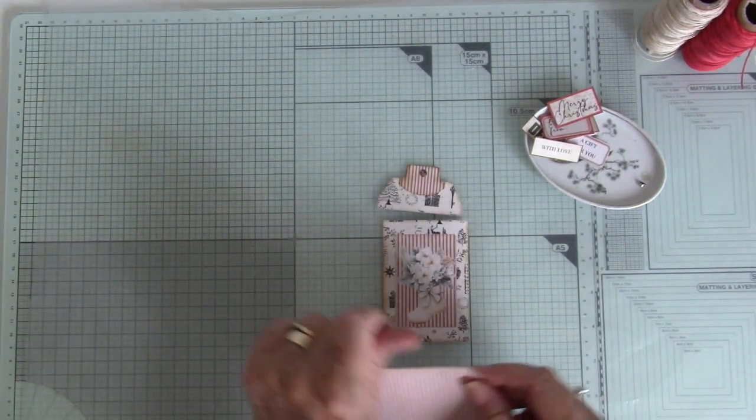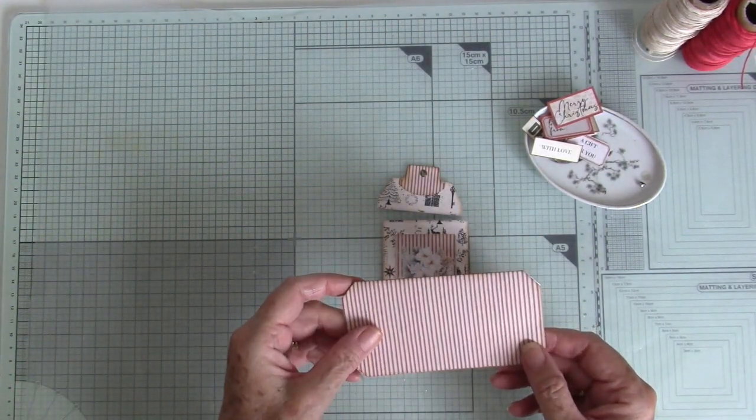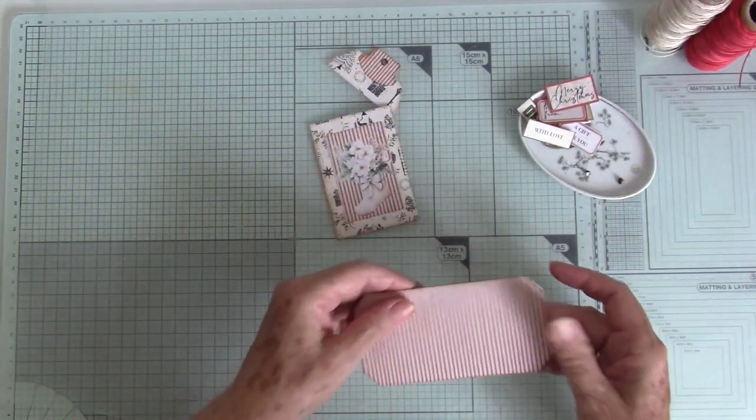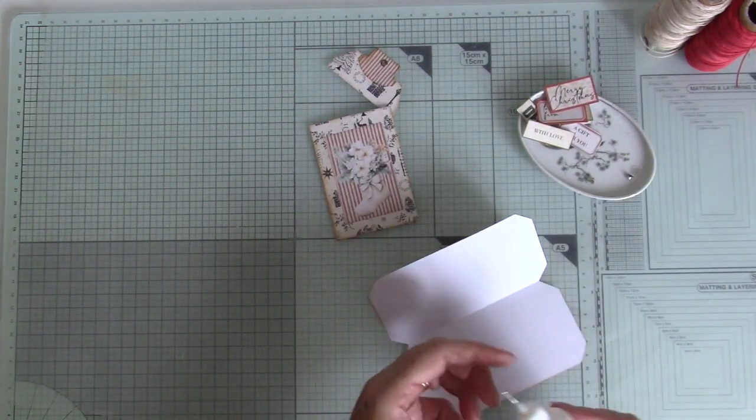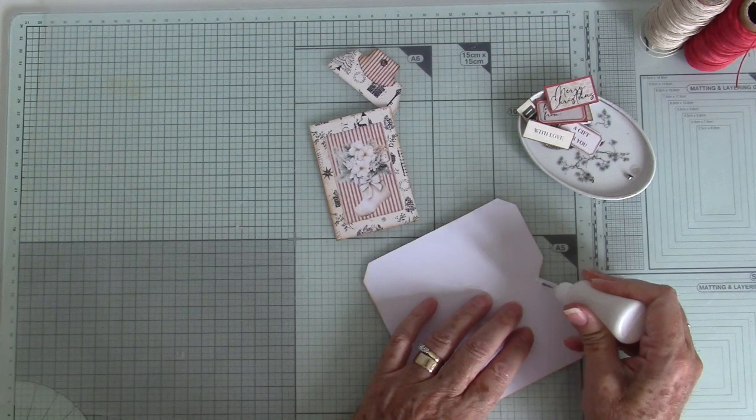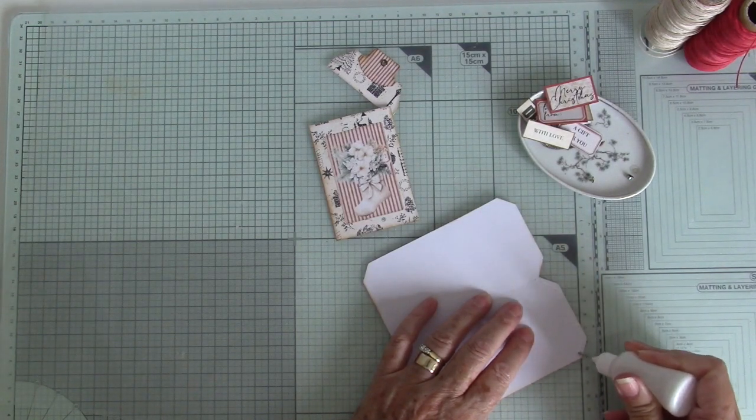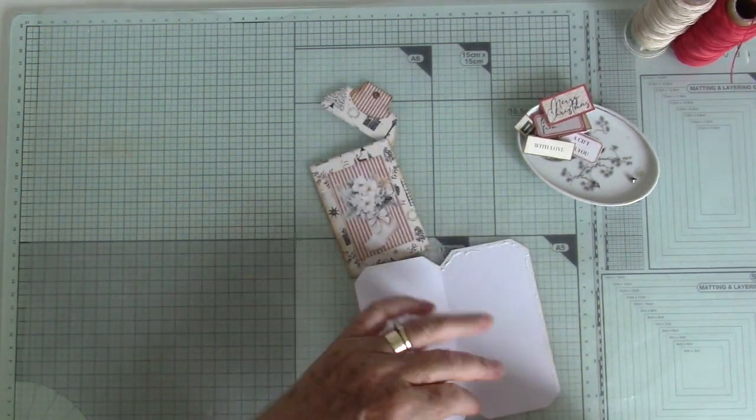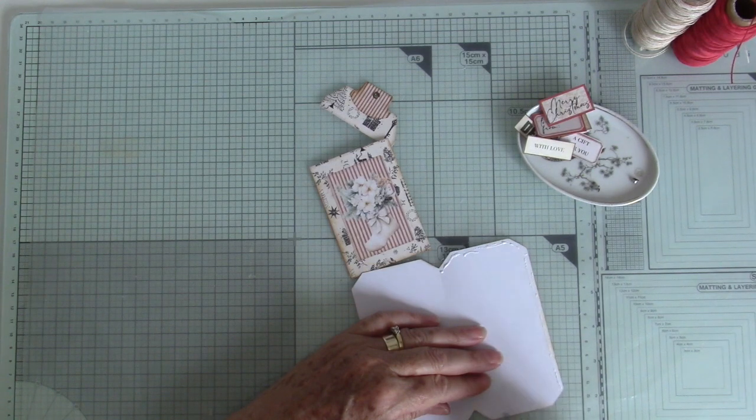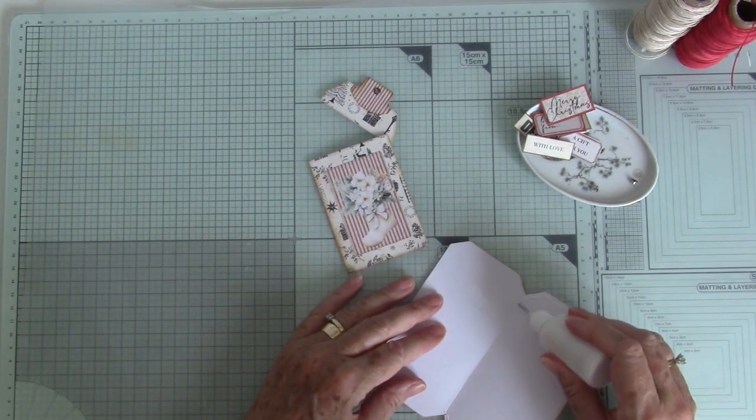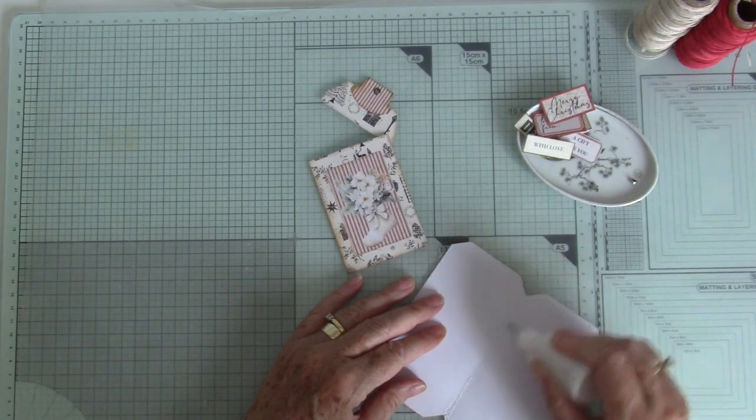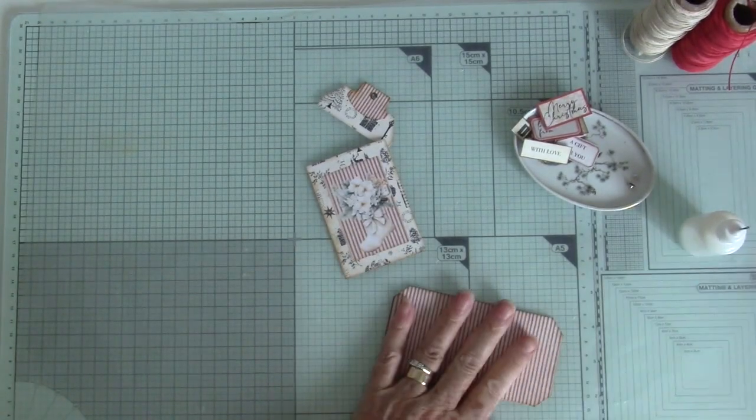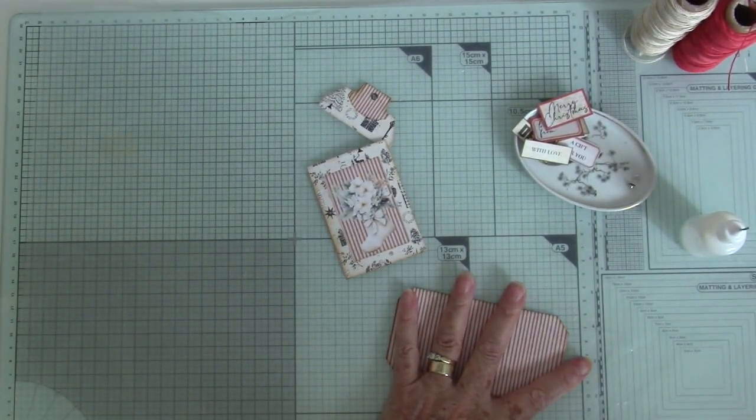Right. So let's see. The next thing is Anna's made this beautiful little wrap to wrap around the card. It's really a little decorative piece. But it's fun. I like it. Just makes it that bit more special, I think.